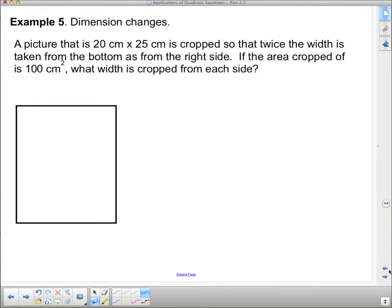Next question. Dimension changes. A picture that is 20 centimeters by 25 centimeters is cropped so that twice the width is taken from the bottom as from the right side. So we're going to crop on the right side. I'm going to crop this much off my picture. But then it says there's twice that amount taken off the bottom, so I need to take that off. So let's let that be x, and then down here is going to be 2x.